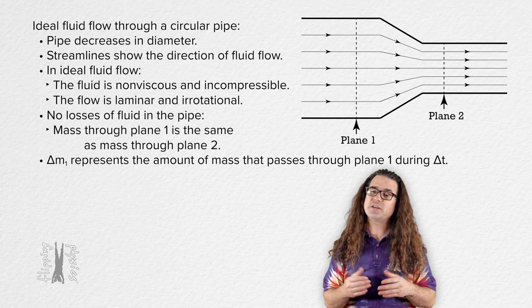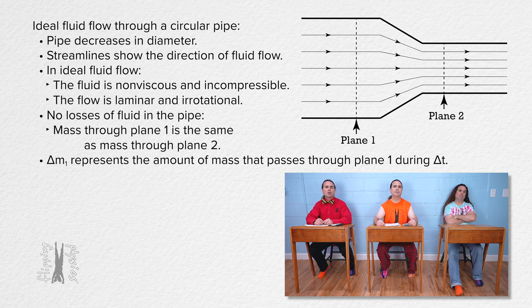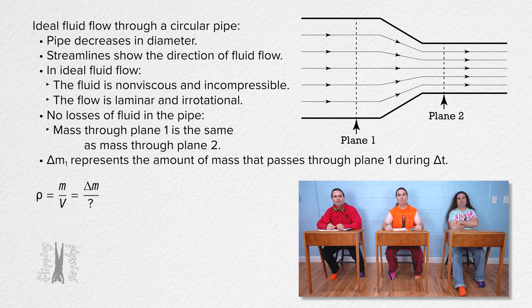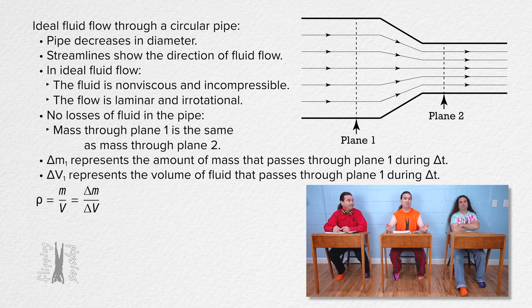What is the equation for density? Density equals mass over volume. Correct. However, considering our mass is delta m — the amount of mass which passes through a plane during change in time delta t — the volume should be delta V: the volume of the fluid which passes through a plane during change in time delta t.